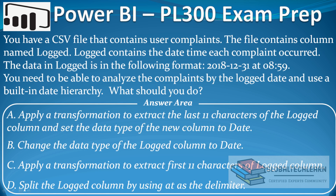The options are: Option A — apply a transformation to extract the last 11 characters of the logged column and set the data type of the new column to date. Option B — change the data type of the logged column to date. Option C — apply a transformation to extract the first 11 characters of the logged column. Option D — split the logged column by using '@' as the delimiter.